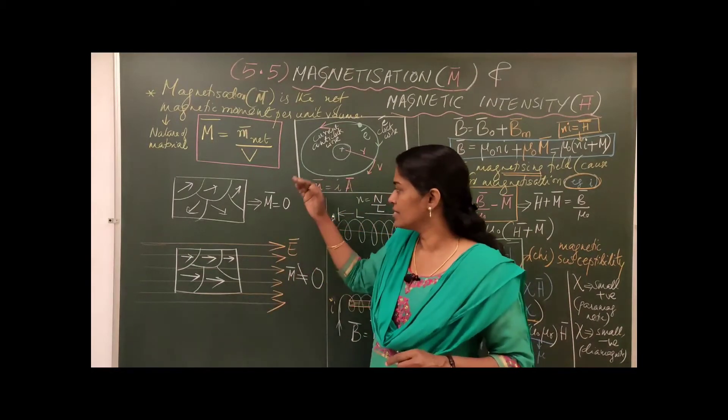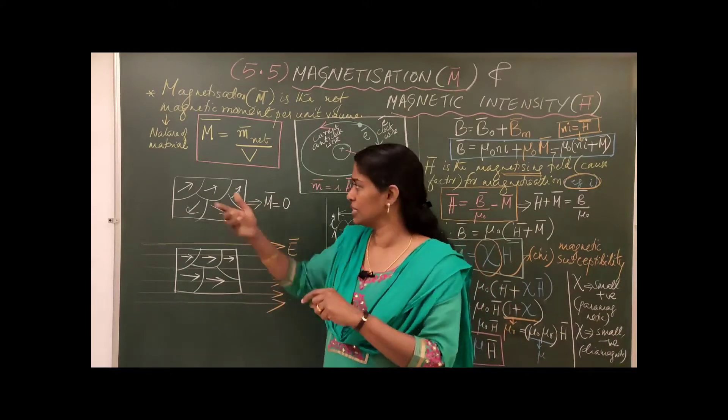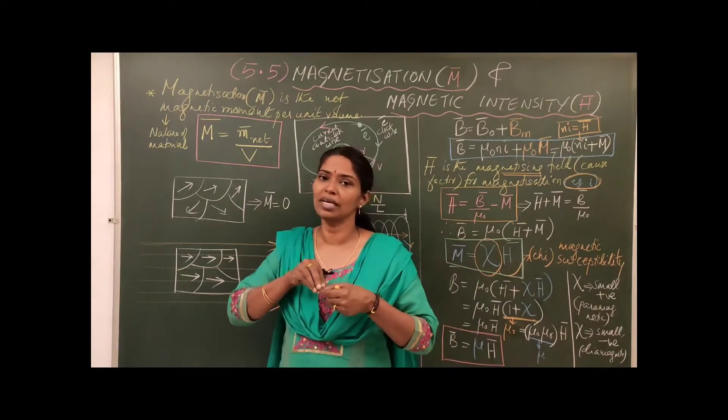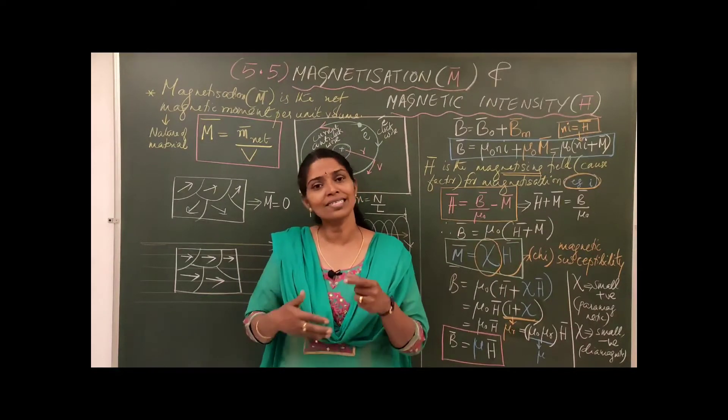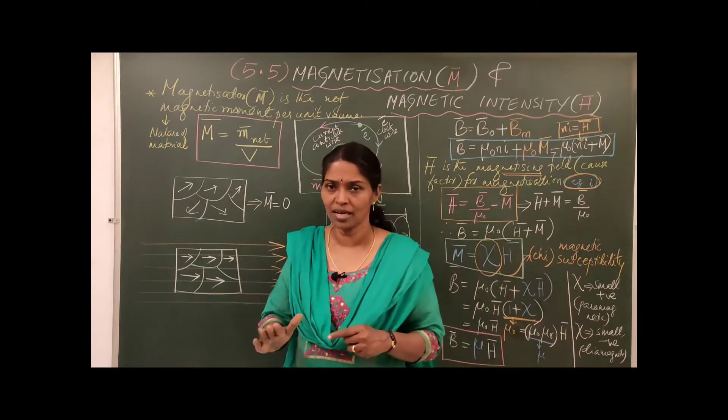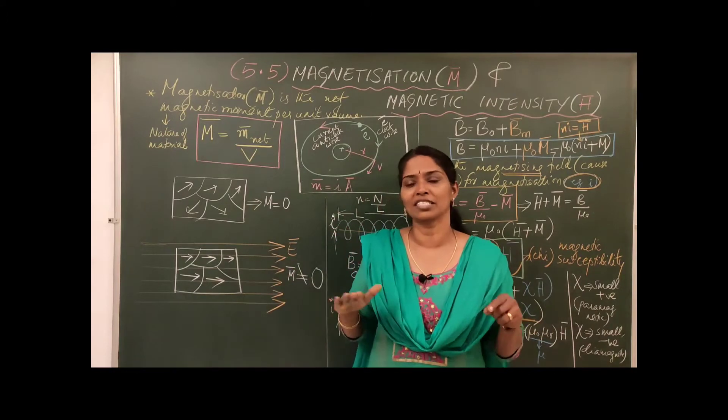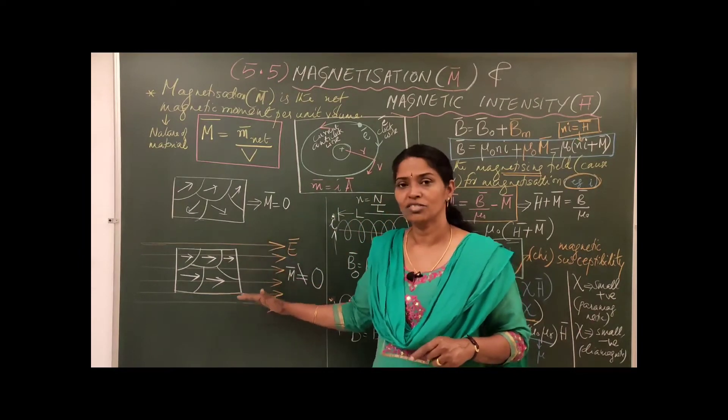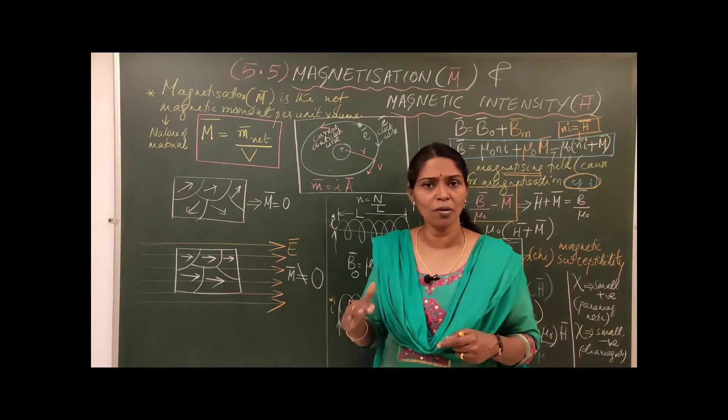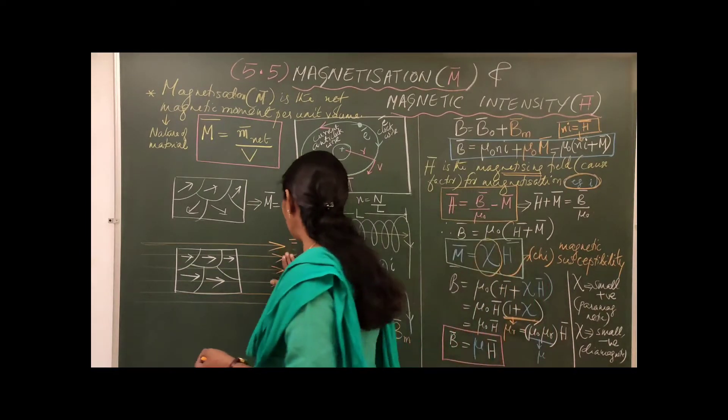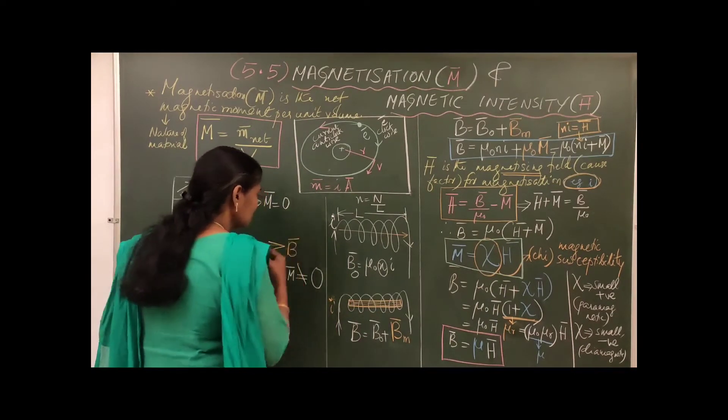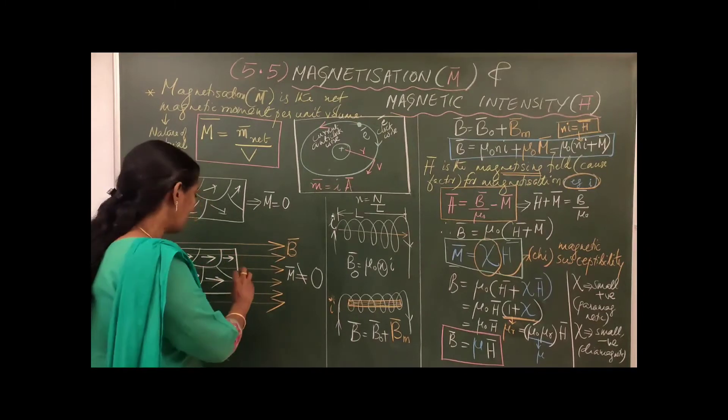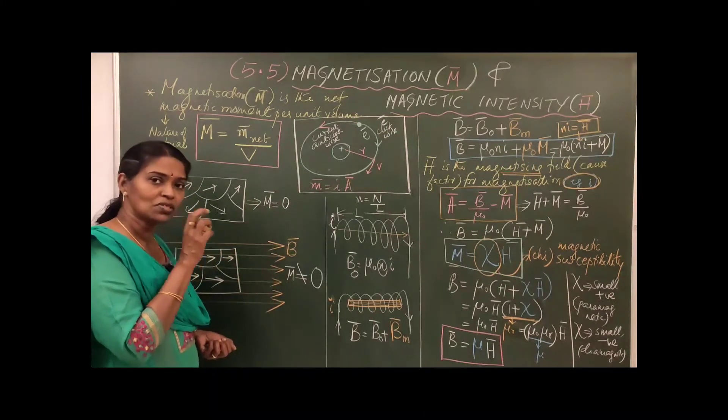And then we place the same material - the nature of the material is very important. Only certain materials you can change from normal material to a magnet. So a material which is liable to magnetization, such kind of material you have to take. And such a material you are placing in a uniform magnetic field. Uniform magnetic field means equally spaced straight lines parallel to each other. It is the representation of uniform magnetic field. We are placing this material which is subjected to magnetization.